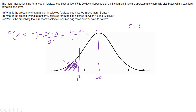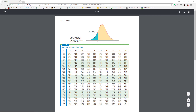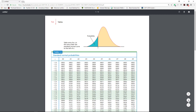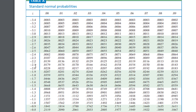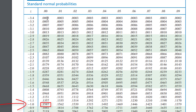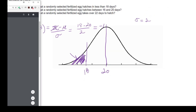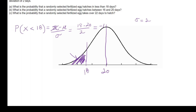Going to the z-table and looking up z = −1.00, we get 0.1587. So the probability that the egg hatches in less than 18 days is 0.1587.